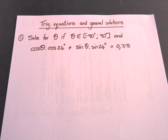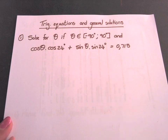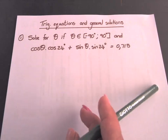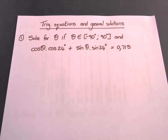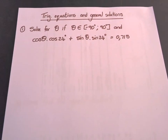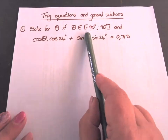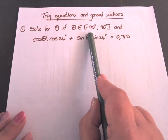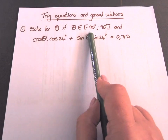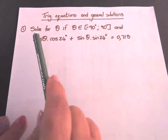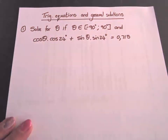Yesterday we touched a little bit on general solutions. Today we are going to combine the general solutions with compound angles and all the other trigonometry identities. When I give you a range for theta, you must remember that you have to work out the values for k — for negative 1, 1, 0, etc. So just remember that. And now we start with our equation.